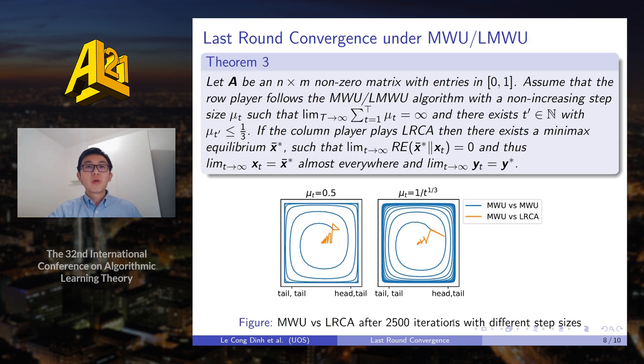We then provide a more refined analysis in the case when the row player follows a specific strategy such as multiplicative weight updates or linear multiplicative weight updates. So in this case, if the column player plays LRCA, then the strategy of both players will converge to the min-max equilibrium of the game and then achieves last round convergence.